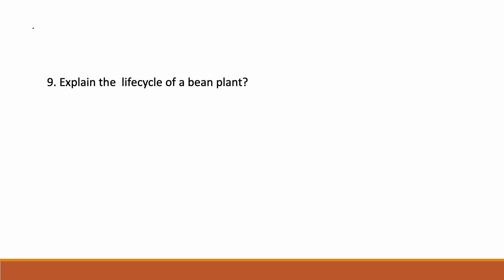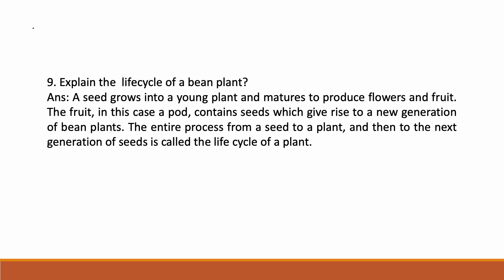Explain the life cycle of a bean plant. A seed grows into a young plant and matures to produce flowers and fruits. The fruit — in the case of a bean plant, called a pod — contains seeds which give rise to a new generation of bean plants. The entire process from a seed to a plant and then to the next generation of seeds is called the life cycle of a plant.